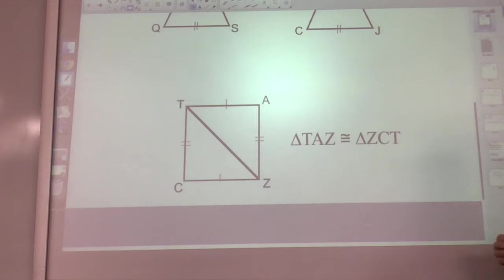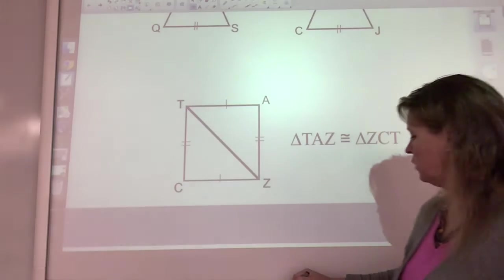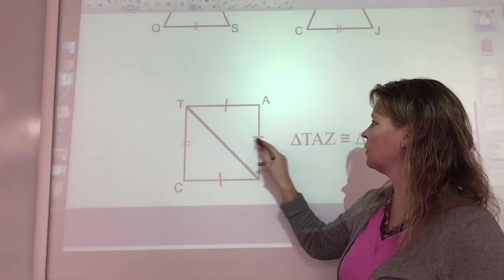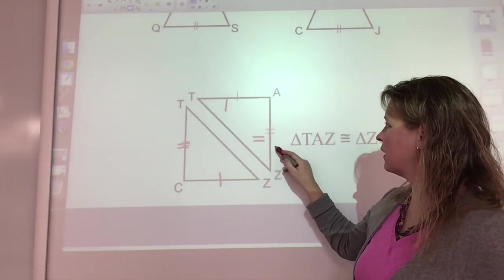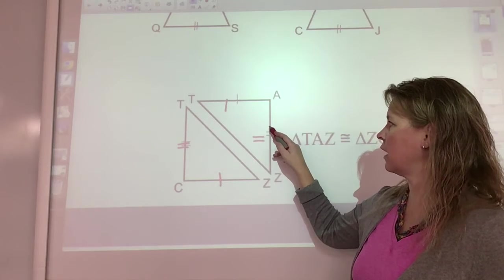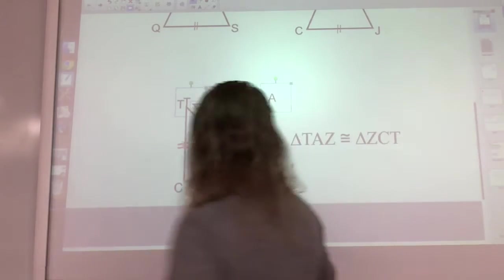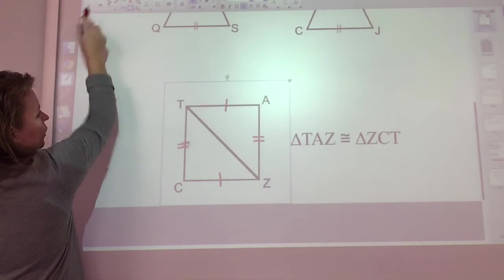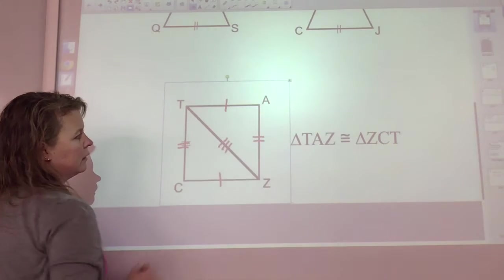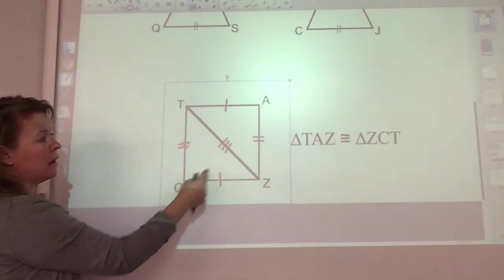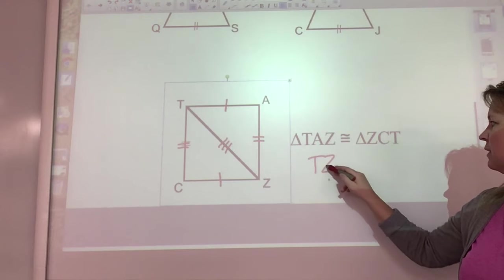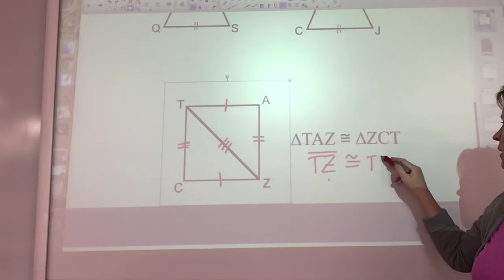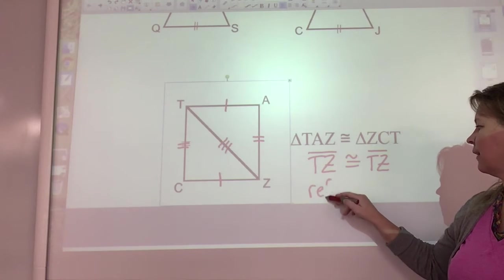Take a look at this next triangle: triangle TAZ congruent to triangle ZCT. As we look at it, we have a pair of single tick marks and a pair of double tick marks, but we don't have a pair of triple tick marks. So we have to ask, is there a third side that's congruent? Well, since they were put exactly on top of each other, we can say yes — this third side is congruent whether it's on the bottom or top triangle. So when it says explain your reasoning, we're going to put that segment TZ is congruent to segment TZ.